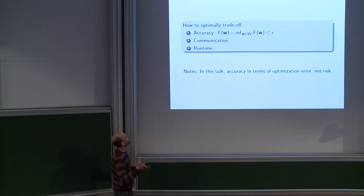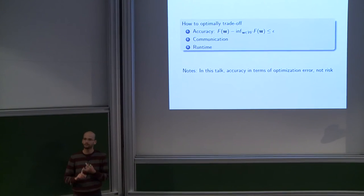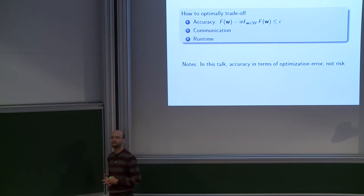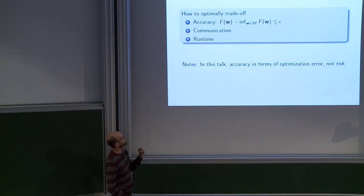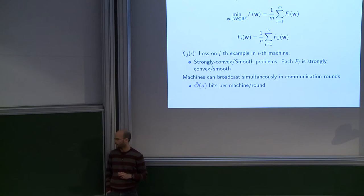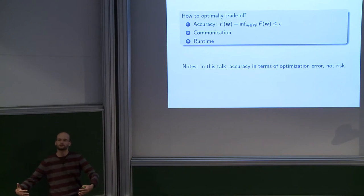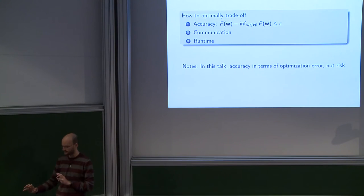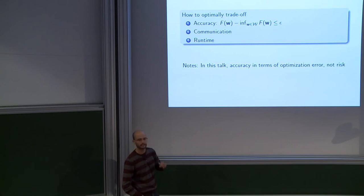The main question is how to optimally trade off between these three requirements: get an accurate solution with as little communication as possible and as little runtime as possible, ideally getting speed-ups from parallelization. In this talk, when discussing accuracy I focus on optimization error — our goal is to minimize this empirical risk function. You can also assume data is sampled IID and minimize expected loss, but that's a slightly different perspective. This is the setting I will focus on.